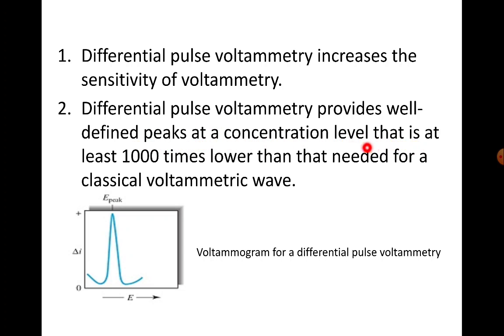that is at least 1000 times lower than that needed for a classical voltammetric wave. So DPV, differential pulse voltammetry, gives us well-defined peaks even when the concentration is low. We get well-defined peaks. Here is a diagram of a voltammogram for a differential pulse voltammetry.